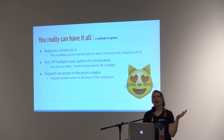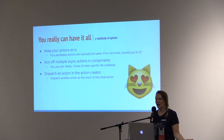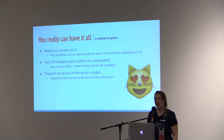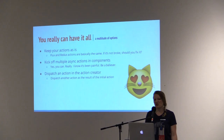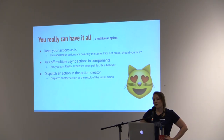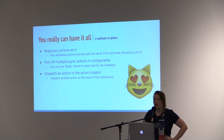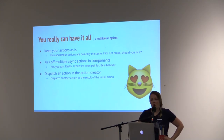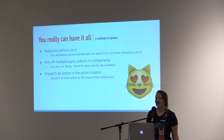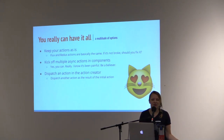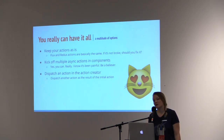With Redux middleware, it feels like you really can have it all — your cake and eat it too. As far as the specific things that we'd been struggling with, we had some decisions to make. We could keep our Flux actions as-is, because Flux and Redux actions are basically the same — if it's not broke, should you really fix it? We had a product to ship. We also had the option of kicking off multiple async actions in the components now. We really had a hard time believing this was possible after all the pain we'd gone through with asynchronous actions and Flux. Or we could dispatch another action in the middle of an action creator as a result of the initial action. We ended up using a mix of all of these options where they made the most sense.